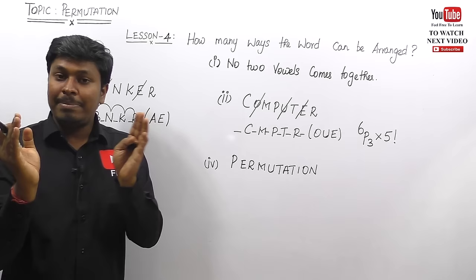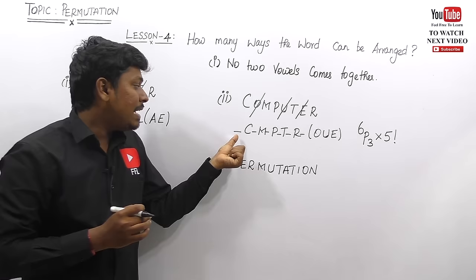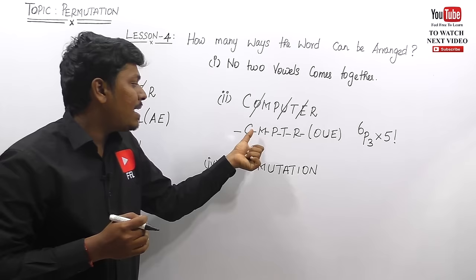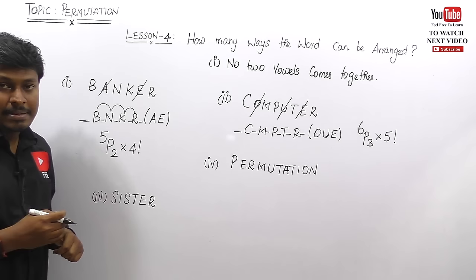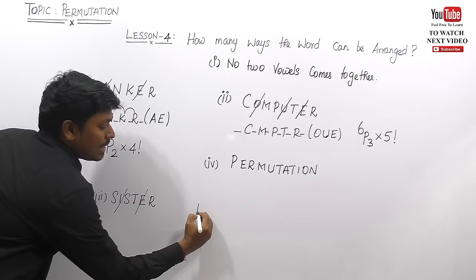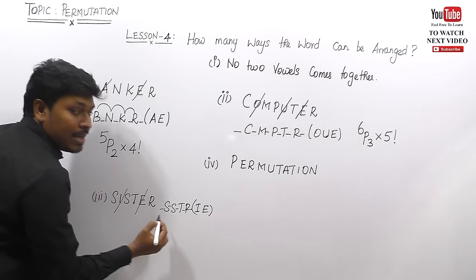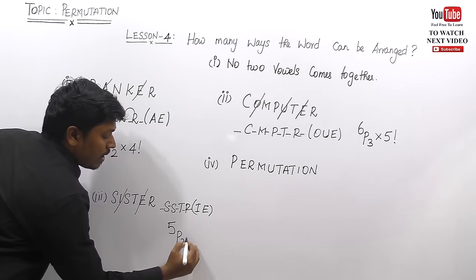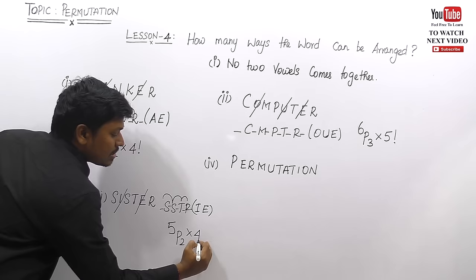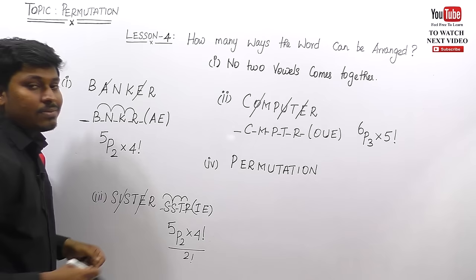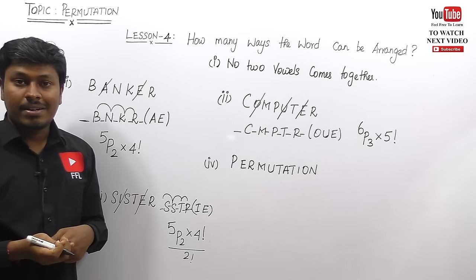Third example: the word SISTER. Vowels are I and E — place them in a bracket. Consonants are S, S, T, R. Count the gaps: five places. Place two vowels in five positions: 5P2. The four consonants S, S, T, R can be arranged in 4 factorial ways, but since S is repeated twice, we divide by 2 factorial. Final answer: 5P2 × (4 factorial ÷ 2 factorial).